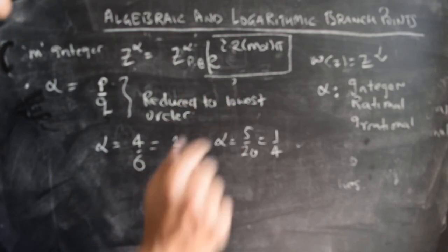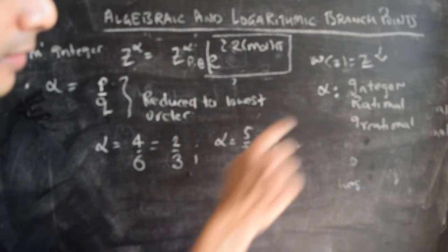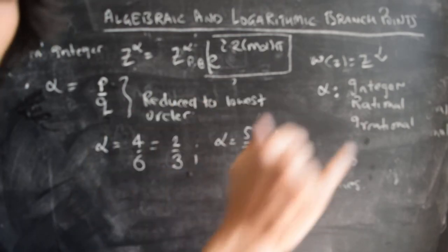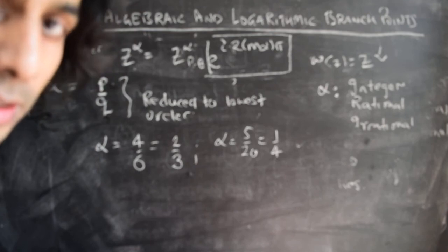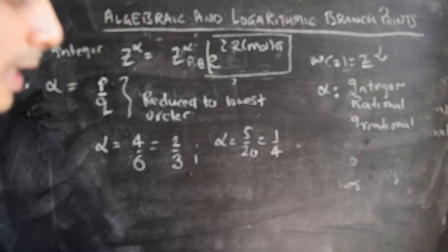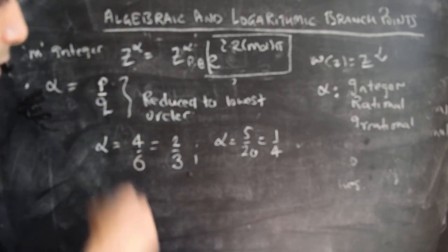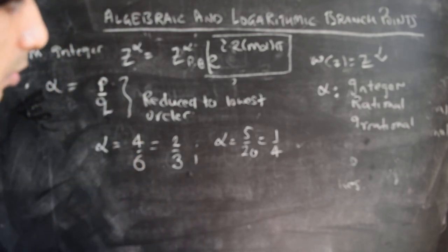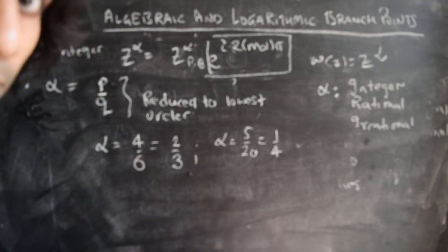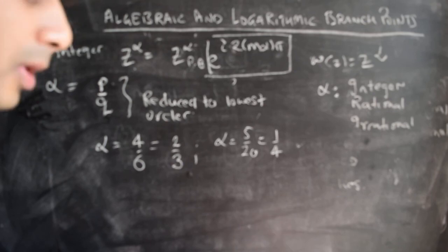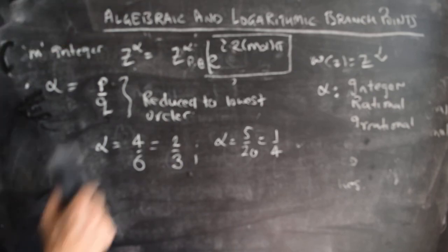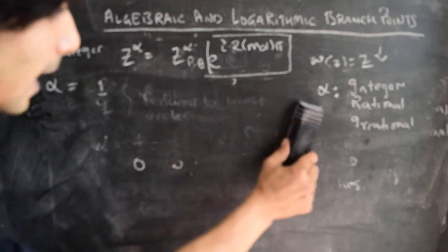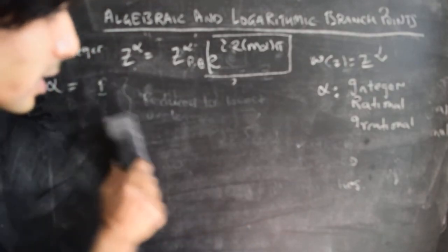So when alpha is a rational number reduced to its lowest order p over q, we again have an algebraic branch point of order q−1, meaning there are q distinct branches. We have now studied two cases: alpha being an integer gives an ordinary single-valued function, and alpha being rational of the form p over q gives a multi-valued function with q distinct branches.